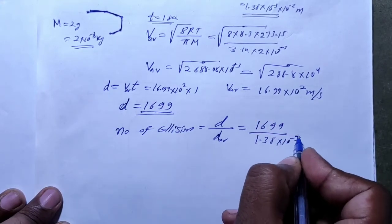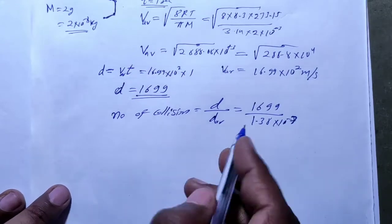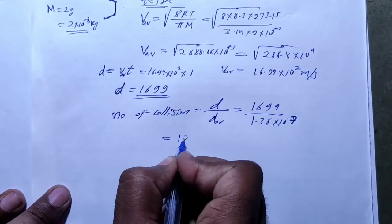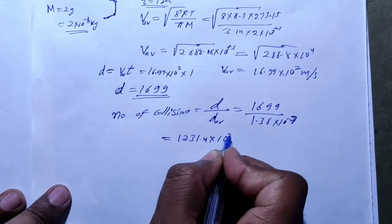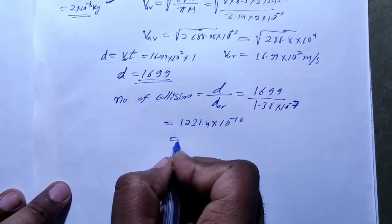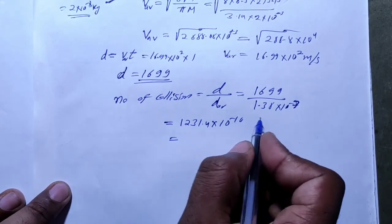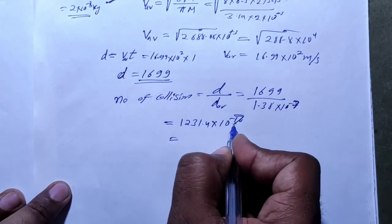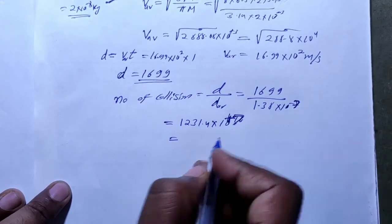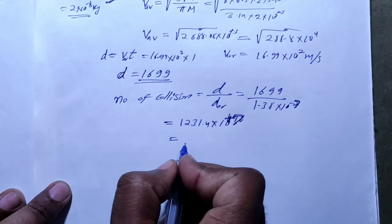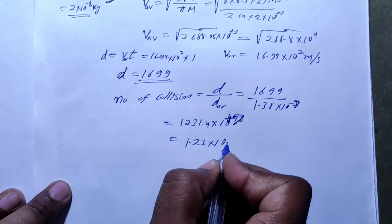The exponent: 5 combined with minus 2 gives minus 7. Solving the division: 16.99 / 1.38 ≈ 1.4 × 10⁻¹⁰... further simplifying, the result is approximately 10⁷ collisions per second.